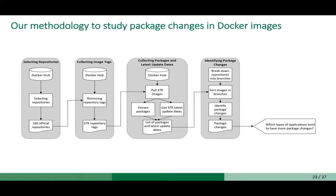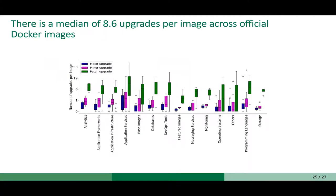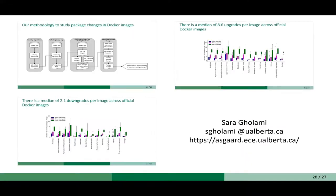Let's have a recap. Our methodology consists of four major steps: we selected official repositories, collected the image tags for those repositories, extracted the packages and latest update dates, and finally identified the changes happening in those packages. Our major findings were a median of 8.6 upgrades per image and a median of 2.1 downgrades per image across official Docker images. It is a very good practice to always be cautious about upgrading Docker images in production environments, as there could be many changes happening in the packages that these images are using.